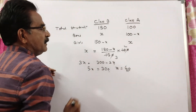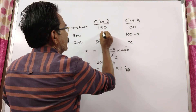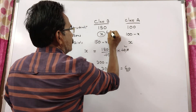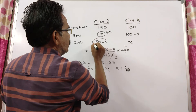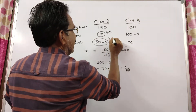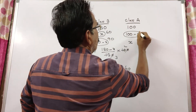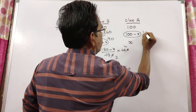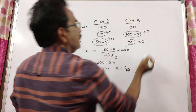Now we got X equals 60. So boys in class B is 60, and girls in class B is 150 minus 60 equals 90. Boys in class A is 100 minus 60 equals 40, and girls in class A is 60.